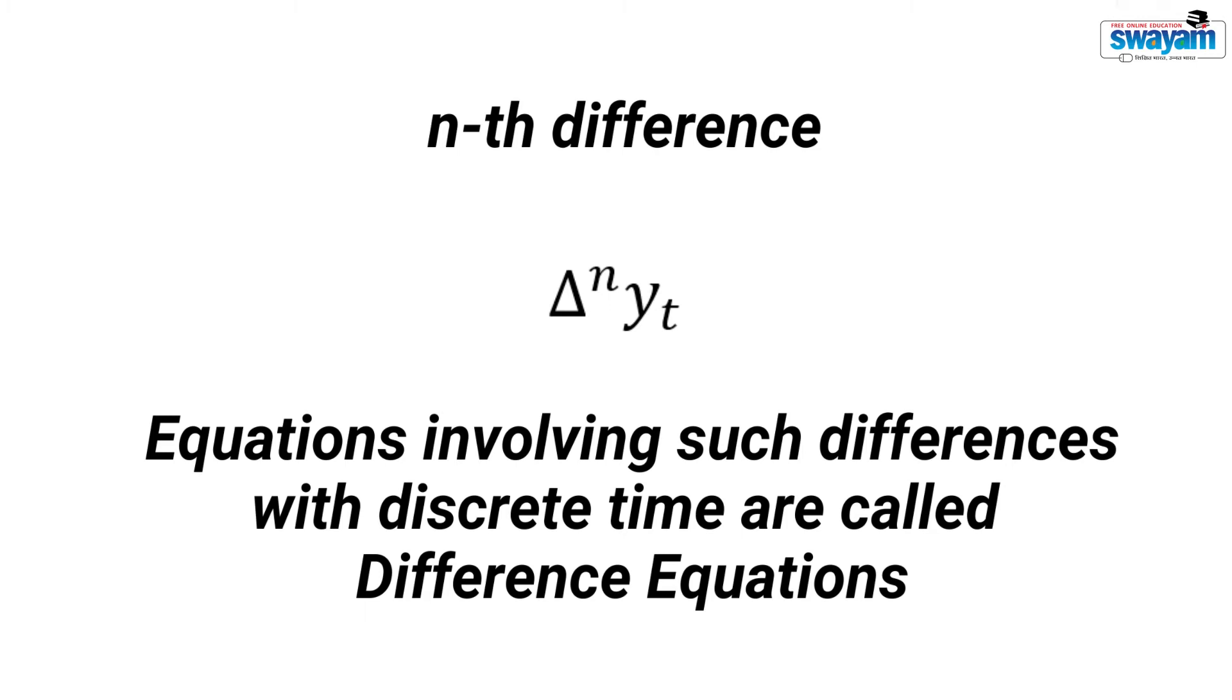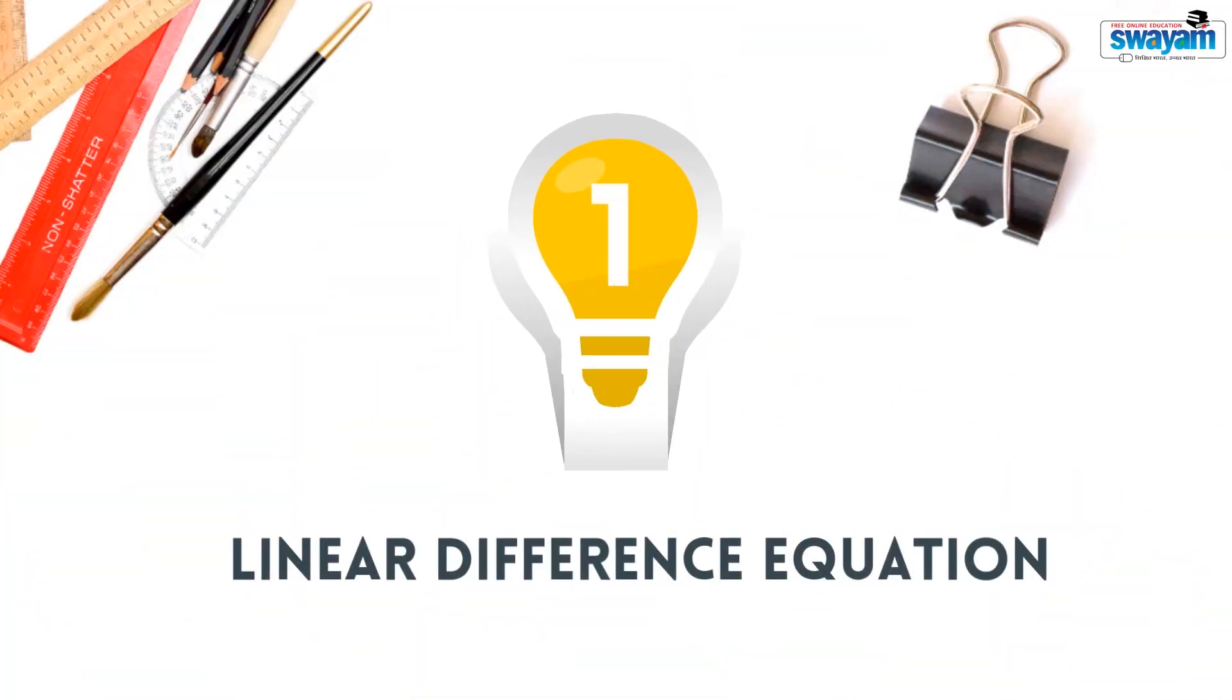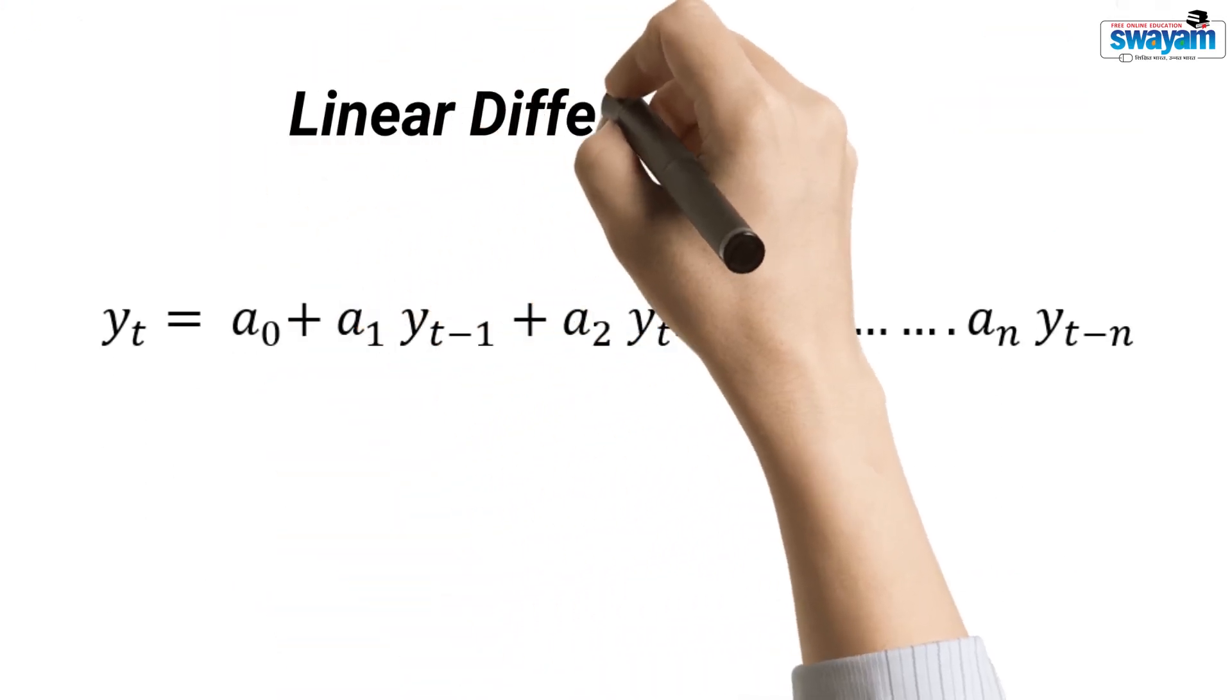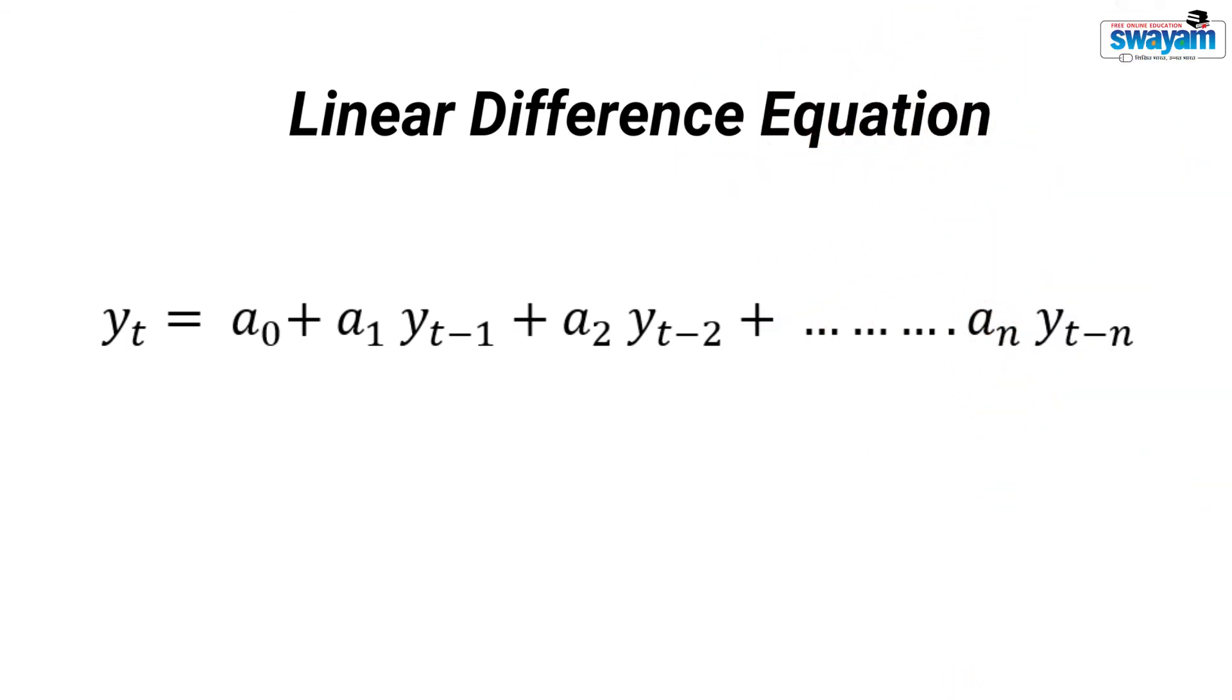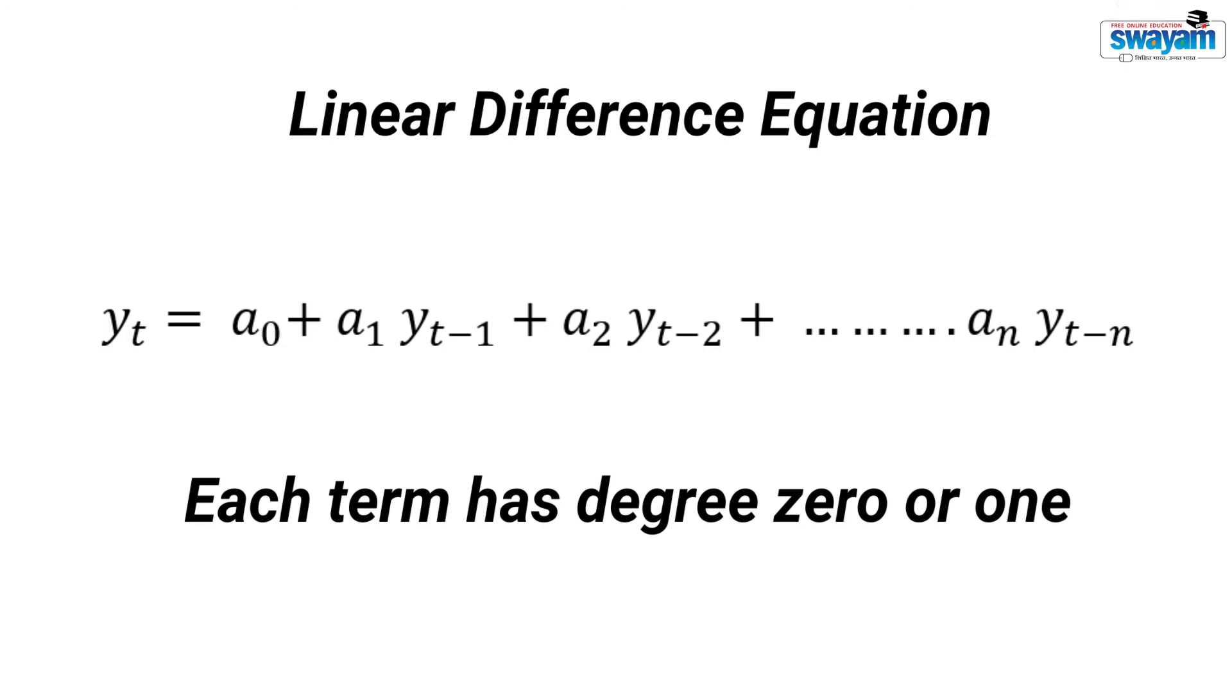Let us see what can be the different types of difference equations. This is the general form of an nth order linear difference equation. A linear difference equation is a difference equation in which each of the terms has a degree 0 or 1.